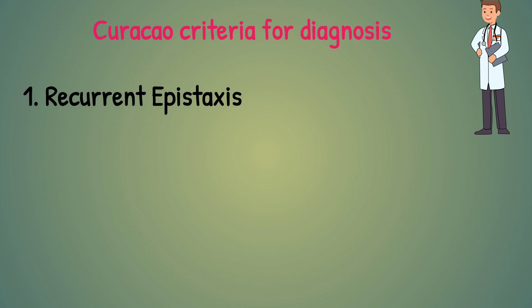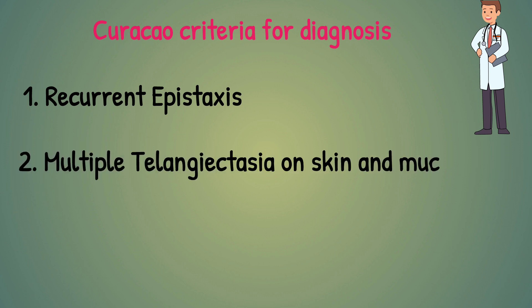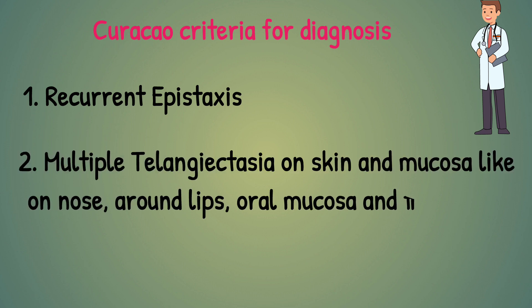Number one is recurrent epistaxis. Number two is multiple telangiectasia on skin and mucosa — on the face, lips, nose, oral mucosa, and fingertips.